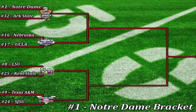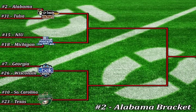Here's how your brackets will shape up for the 32-team playoff. In the Notre Dame bracket: Notre Dame, Arkansas State, Nebraska, UCLA, LSU, Kent State, Texas A&M, and San Jose State — two SEC teams, a Pac-12 team, a Big Ten team, an independent, a Sunbelt team, a MAC team, and a WAC team. In the Alabama bracket: Alabama, Tulsa, NIU, Michigan, Georgia, Wisconsin, South Carolina, and Texas — three SEC teams, two Big Ten teams, a Conference USA team, a MAC team, and a Big 12 team. NIU has quite a fight ahead of them if they want to win this thing.